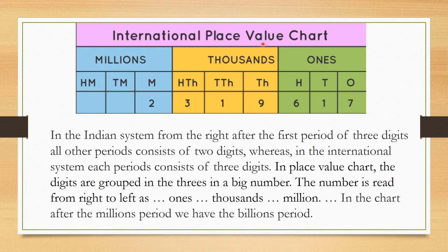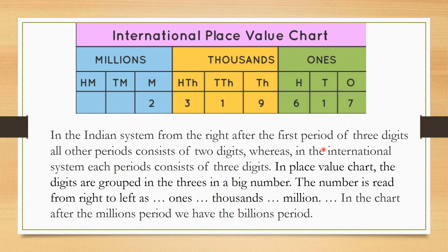The International Place Value Chart consists of three groups. In the Indian system, after the first period of three digits, all other periods consist of two digits. Whereas in the international system, each period consists of three digits. The international place value system is used because place value systems are not uniform throughout the world, and many countries follow this system.